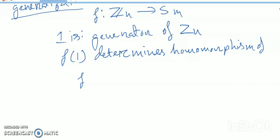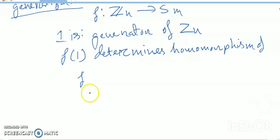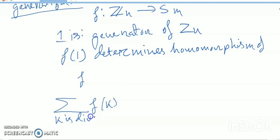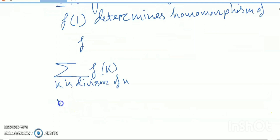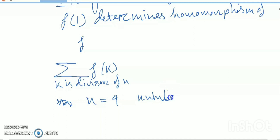Let ρ(k) be the number of elements of order k in Sm. Then the number of required homomorphisms equals the sum of ρ(k) where k is a divisor of n. Here n = 4, so the divisors are 1, 2, and 4.